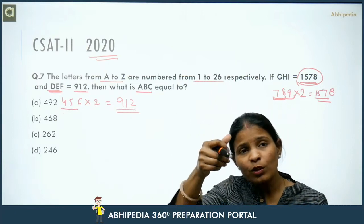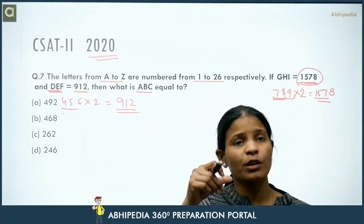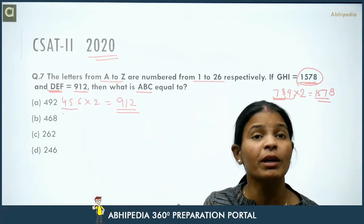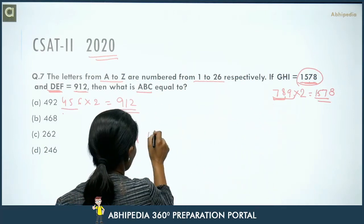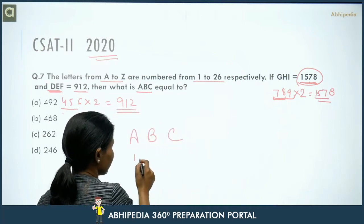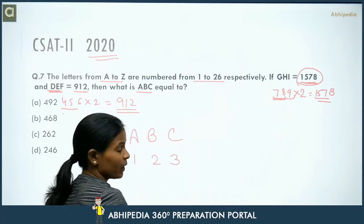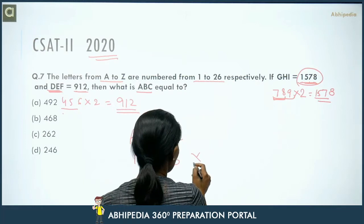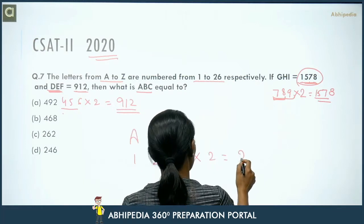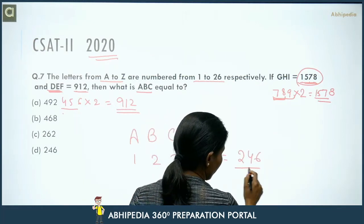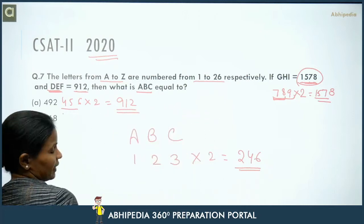The logic is that we multiply each letter's position number by 2. For ABC: A=1, B=2, C=3. Multiplying by 2 gives 2, 4, 6. So the answer is 2-4-6.